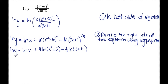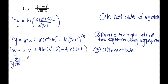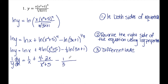The third step is to differentiate both sides. The derivative of ln(y) is (1/y)·(dy/dx) by implicit differentiation. On the right side, the derivative of ln(x) is 1/x. For 4·ln(x² + 5), using the ln(u) rule where the derivative is u′/u, I get 4 times 2x over (x² + 5). Then minus one-third, and using u′/u again: u′ is 3 and u is (3x + 1).